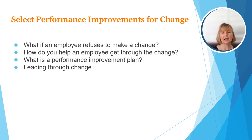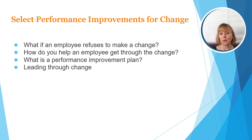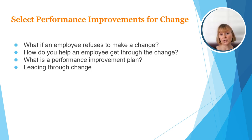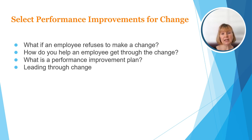Every company calls it something a little different — they might say they're writing someone up, or it may have a different title. Essentially, you sit down with the employee, go through the behavior or lack of change you're seeing, and specifically state what you would like to see. All of that is in writing, the employee adds their understanding in writing, everybody signs it, and it usually goes to human resources. If an employee refuses simply because they're unaware of what they should be doing, that should be a quick situation to resolve.